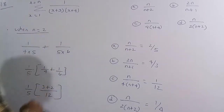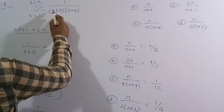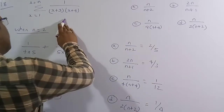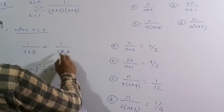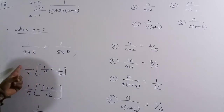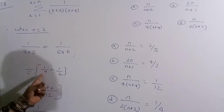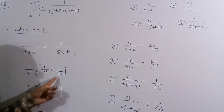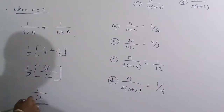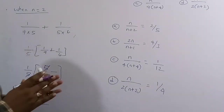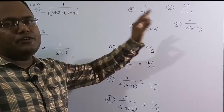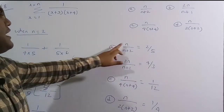For x = 1: 1/(4×5) = 1/20. For x = 2: 1/(5×6) = 1/30. Taking 1/5 as common: (1/5)(1/4 + 1/6). LCM of 4 and 6 is 12: (1/5)(3/12 + 2/12) = (1/5)(5/12) = 1/12. So the sum of first two terms = 1/12.